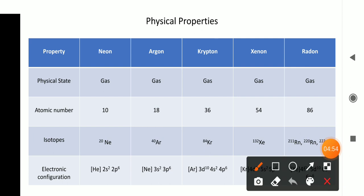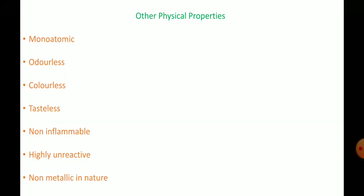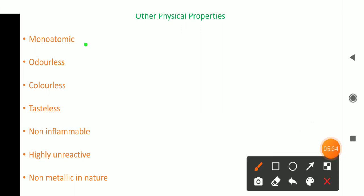If we look at their outer electronic configuration: neon's is 2s²2p⁶, argon's is 3s²3p⁶, krypton's is 4s²4p⁶, xenon's is 5s²5p⁶, and radon's is 6s²6p⁶. From here, we can conclude that all noble gases possess the general valence shell electronic configuration ns²np⁶. With this, the physical properties of noble gases are complete. Additionally, the noble gases are monoatomic in nature, which means they never form molecules — they always exist as single atoms, never as diatomic or triatomic molecules.